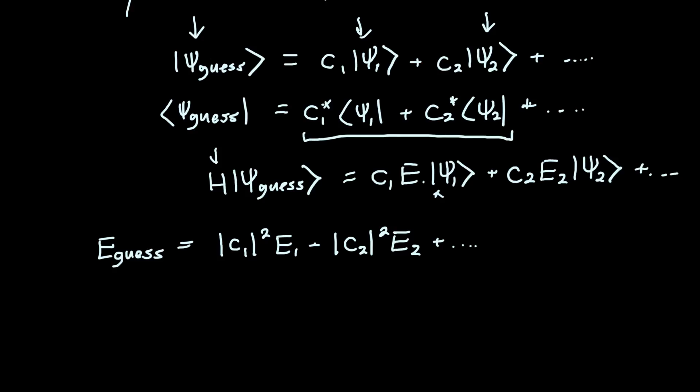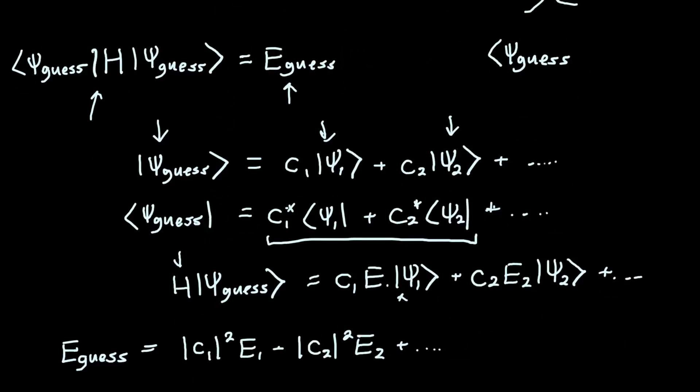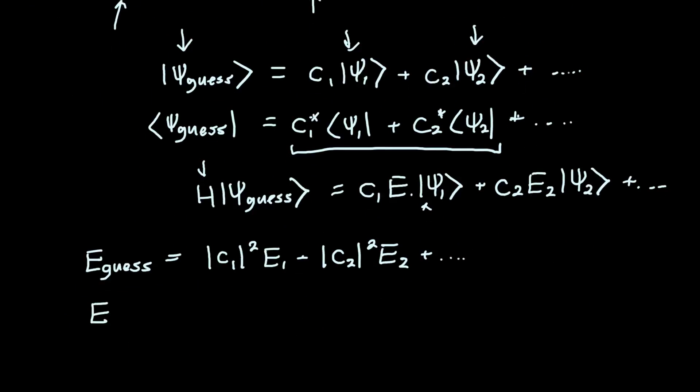But now is when the variational principle starts to tell us something. We're going to do something clever. We're going to say, I don't know what E2, E3 are, but I know that they're all greater than E1. And that's just by definition—if this is our ground state energy, everything else is higher than that. So we can bound our guess energy. It's always going to be greater than or equal to if we just plop E1 for all of these energies.